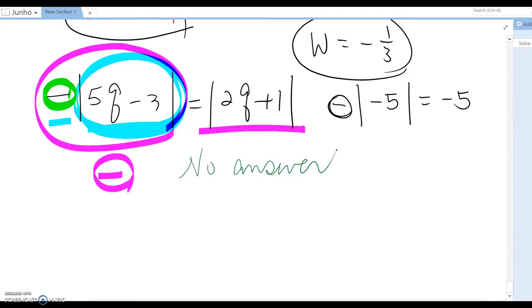One more time: because of this sign, this whole thing becomes negative value. I don't know what value will be, but no matter what we do, this will be negative value, and this absolute value cannot be negative. That's why this equation should be no answer.